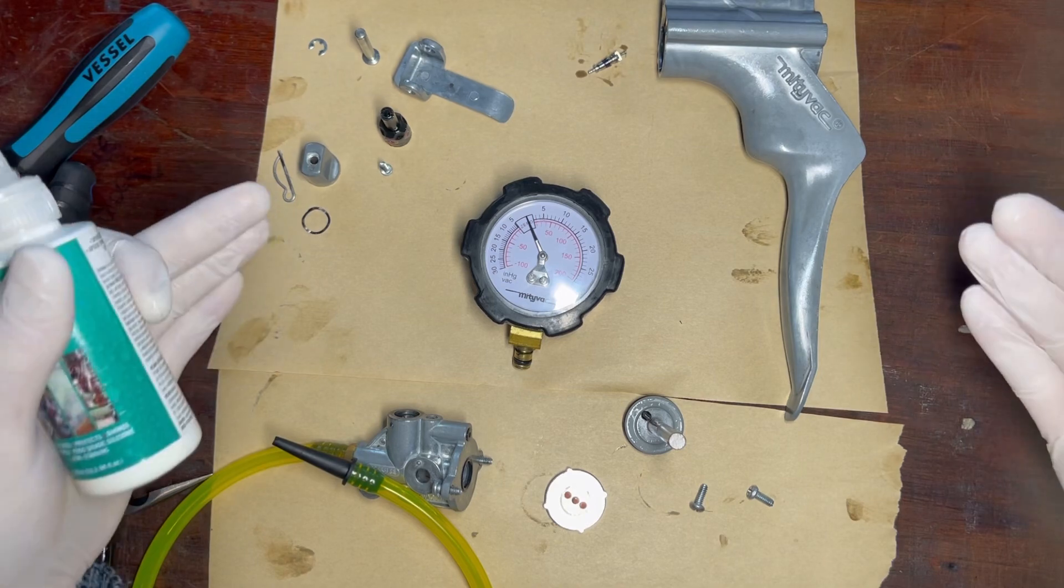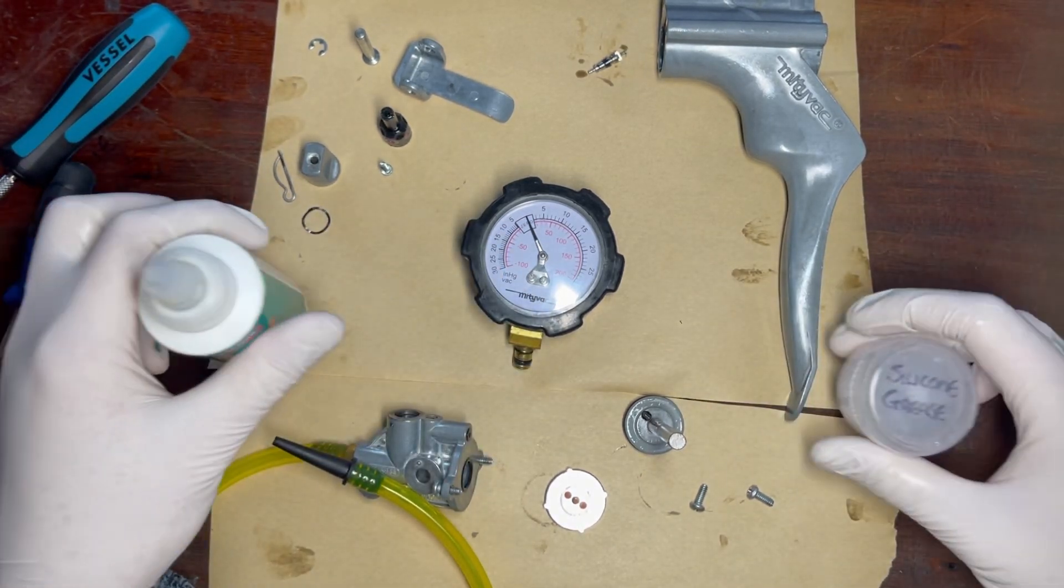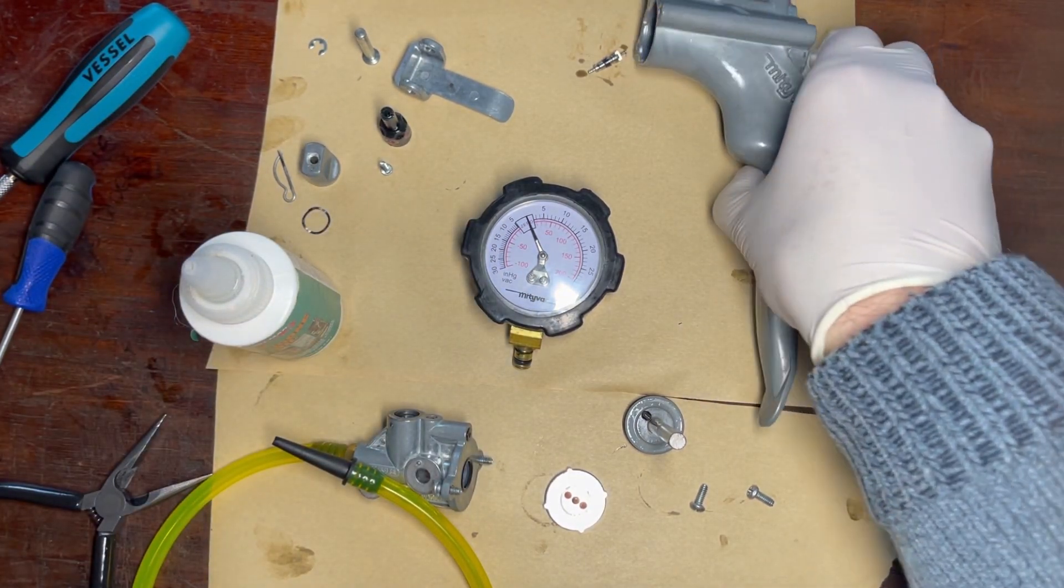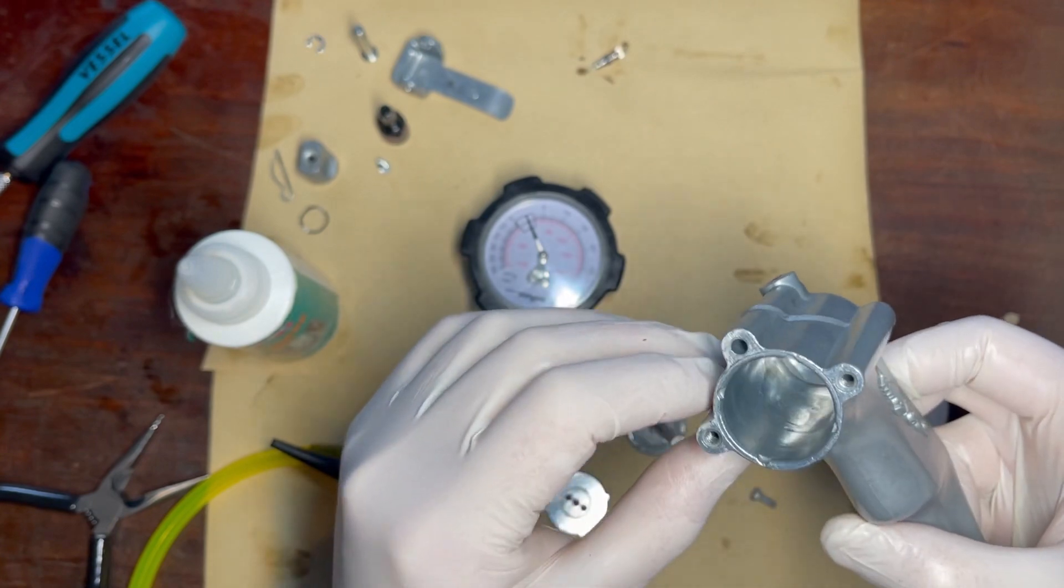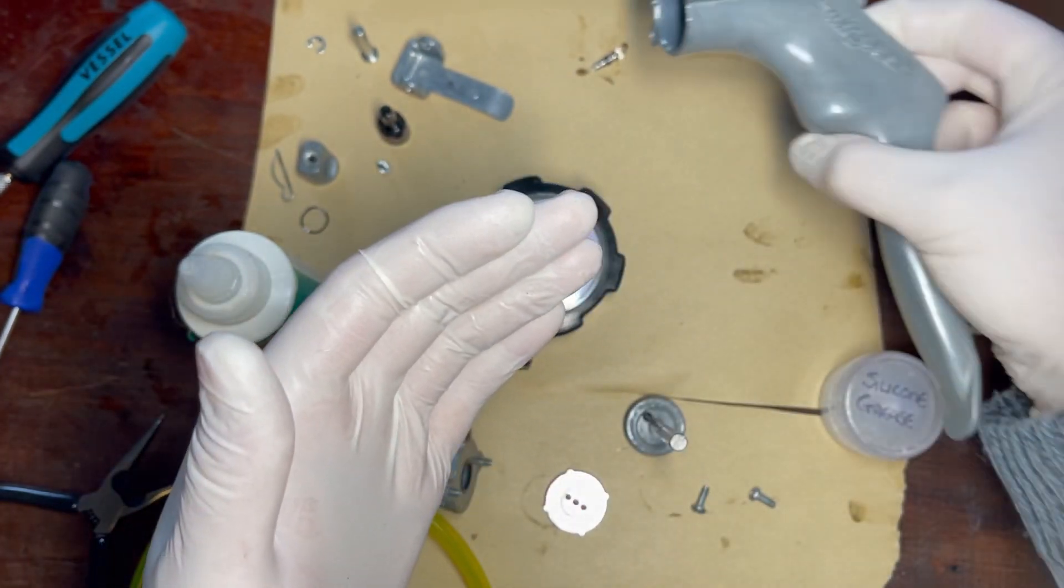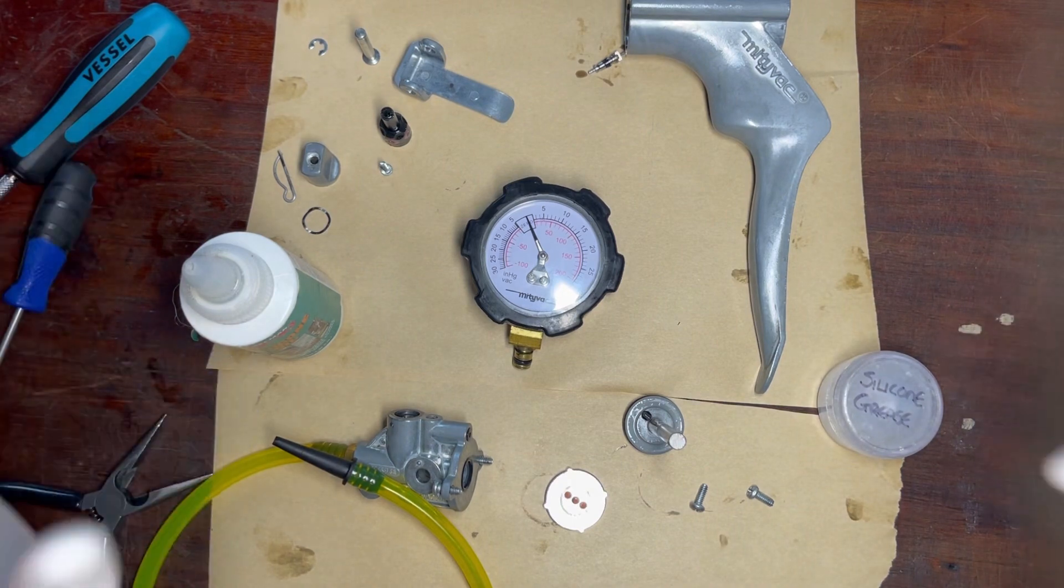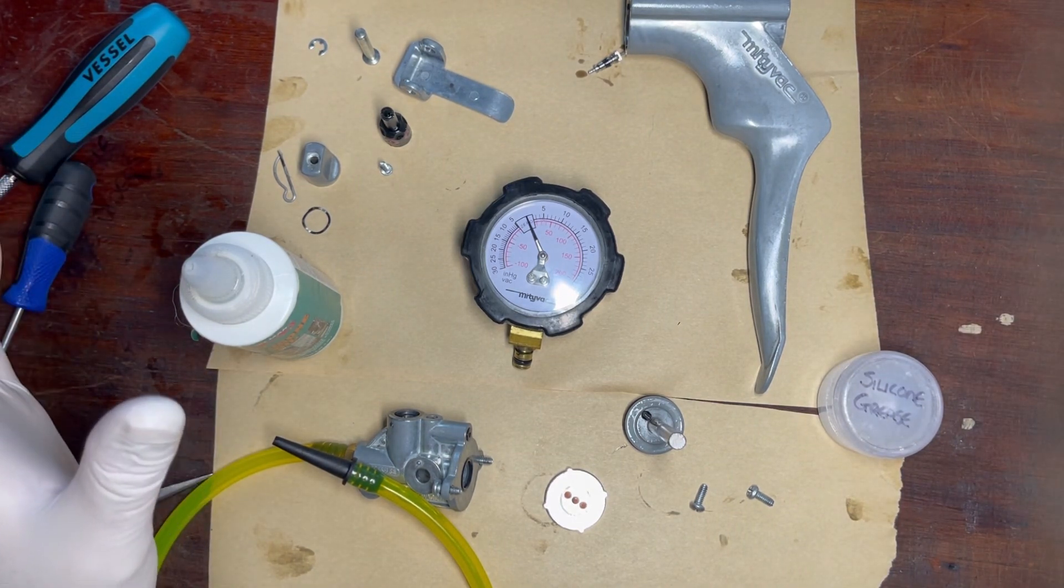So now everything's disassembled, it's time to clean it. And as I said, I've actually done this the other day, so everything looks really nice and clean. But don't be surprised when you take yours apart to find kind of grease that's all black and oil that's all black. That's completely normal. Wipe it out with a rag. Don't use harsh chemicals.